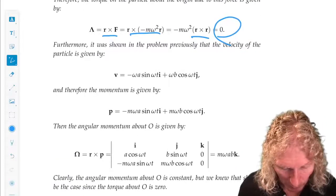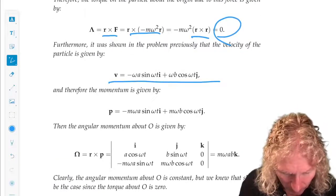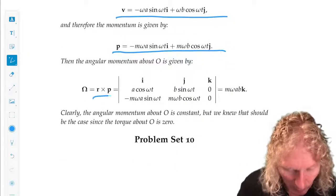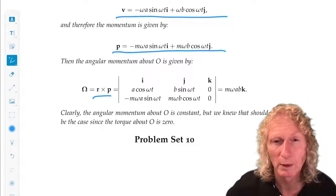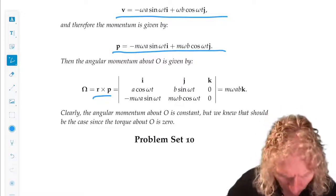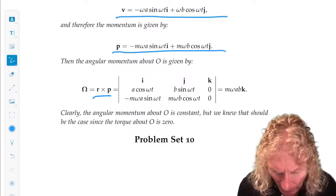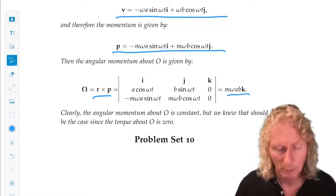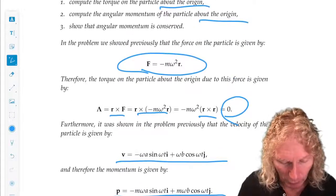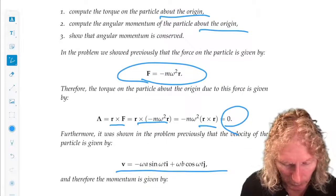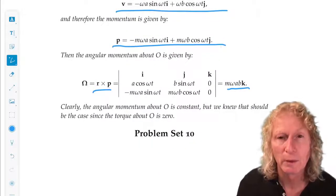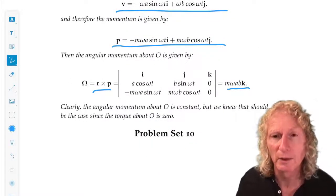Now we've already computed the velocity. We get the momentum for free. We can compute the angular momentum using the formula for the cross product, and we get that it's m omega a b times k. Wait, what we asked to prove, show that angular momentum is conserved. How does this show that it's conserved? It's conserved means it's constant in time. It doesn't change in time.